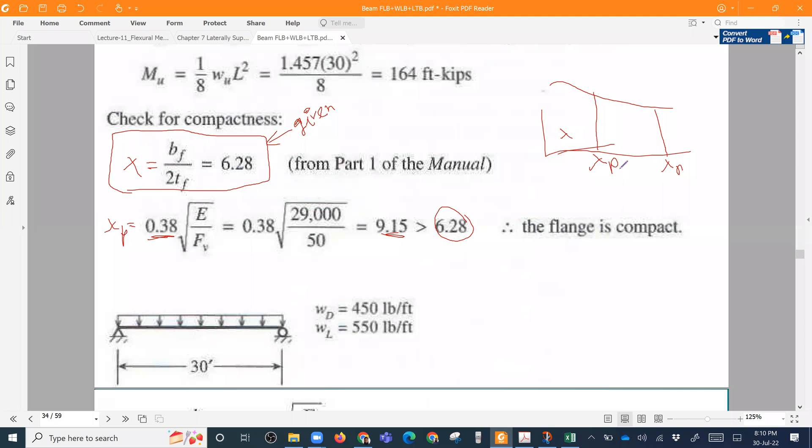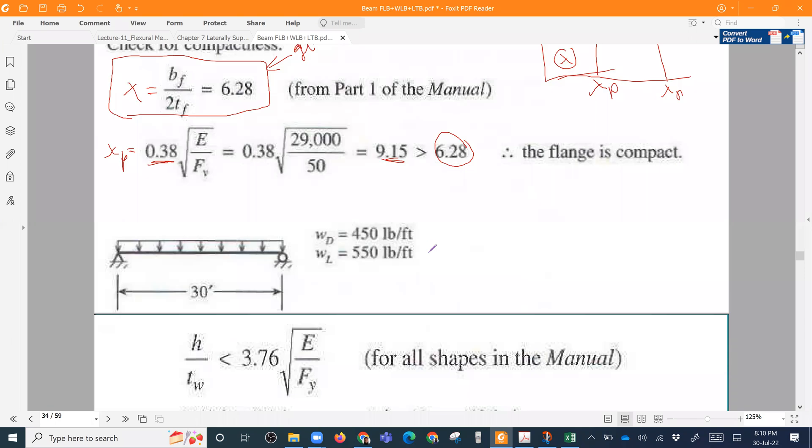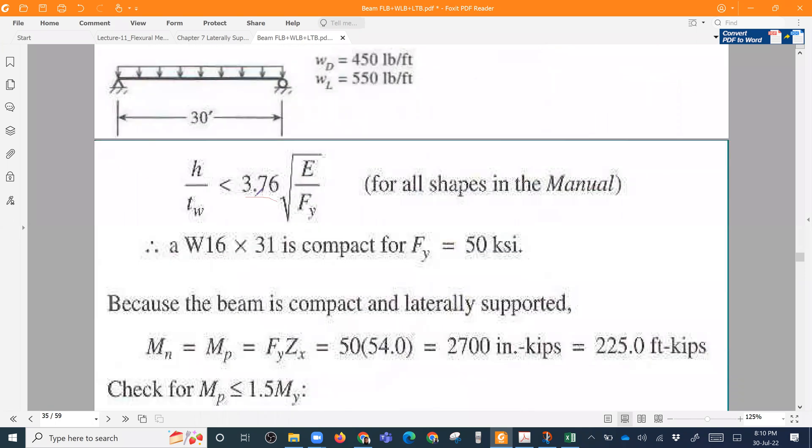So this is already less than 9.15. That means my section, my flange is compact, since lambda is less than lambda p.